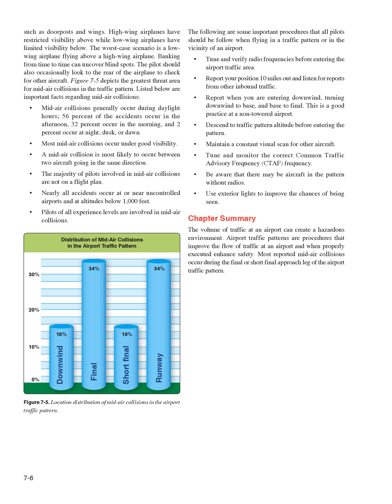Figure 7-5 depicts the greatest threat area for mid-air collisions in the traffic pattern. Important facts regarding mid-air collisions: they generally occur during daylight hours — 56% of accidents occur in the afternoon, 32% in the morning, and 2% at night, dusk, or dawn. Most mid-air collisions occur under good visibility. A mid-air collision is most likely to occur between two aircraft going in the same direction. The majority of pilots involved are not on a flight plan. Nearly all accidents occur at or near uncontrolled airports and at altitudes below 1,000 feet. Pilots of all experience levels are involved in mid-air collisions.